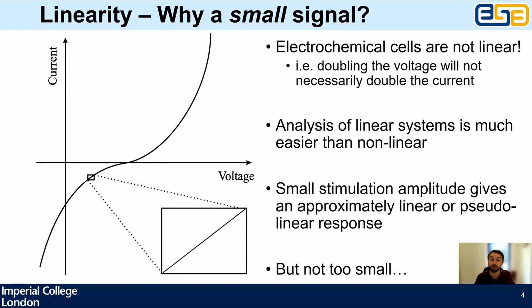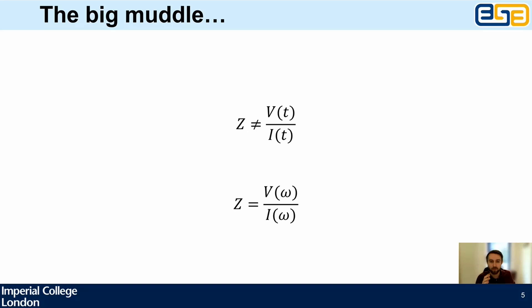Don't make the signal too big or it'll be non-linear, but don't make it too small or you'll have a signal-to-noise problem. That's why you pay good money for high-quality impedance equipment — it can generate small signals and measure them accurately across a wide range. The key insight is that impedance is not the ratio of voltage and current in time — it's voltage and current in frequency.